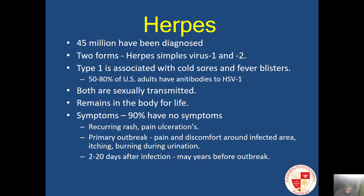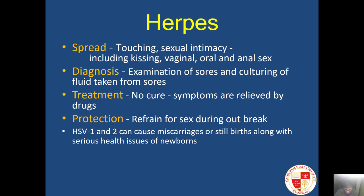Herpes has two forms: herpes simplex virus 1 and 2, basically above the waist and below the waist. Both are sexually transmitted diseases that remain in the body for life — it is a virus. It can cause recurring rash and painful ulcerations. Primary outbreaks include pain, discomfort, itching, and burning around the infected area, including during urination. The slide covers how herpes is spread, diagnosed, treated, and protected against.